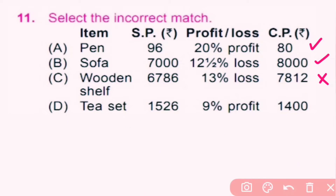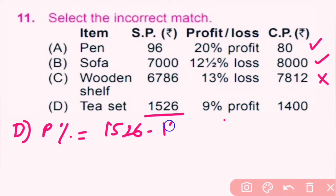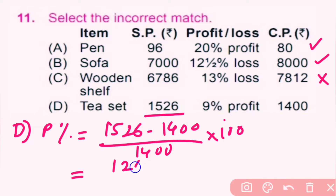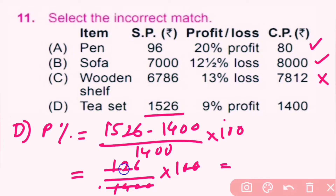Now we solve option D. Sale price is 1,526 and cost price is 1,400, so there is profit. Profit percent equals sale price minus cost price divided by cost price into 100, which is 126 divided by 1,400 into 100, giving 9% profit. So it is also a correct match. Only option C is incorrect, so C is the correct answer.